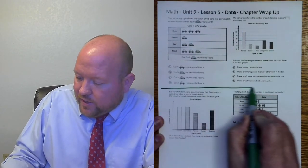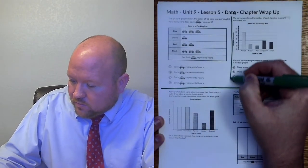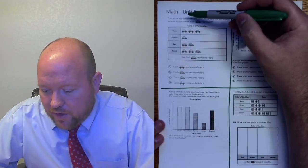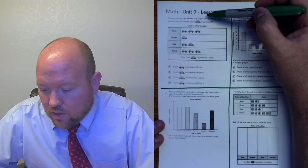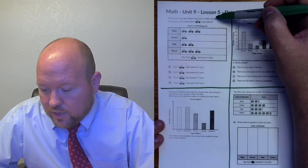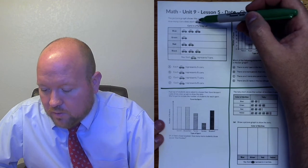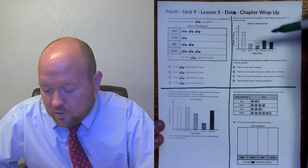So we have four different problems here. Let me go ahead and divide these apart and let's look at this first one. It says the picture graph shows the color of 63 cars in a parking lot. How many cars does each symbol represent?